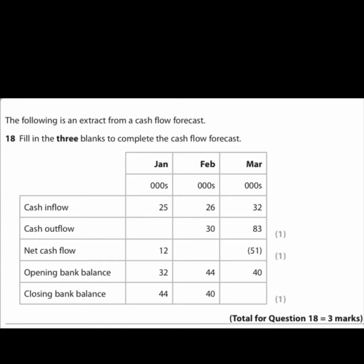This is a past GCSE question for Edexcel — a standard question about filling in missing gaps in a January, February, March cash flow table. I'd start with the easiest calculation first to build confidence, especially if exam pressure is getting to you. The net cash flow is a simple calculation of inflows minus outflows.